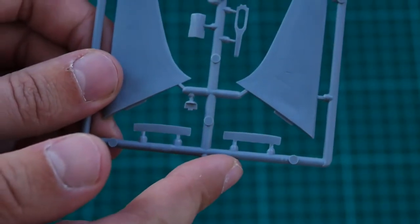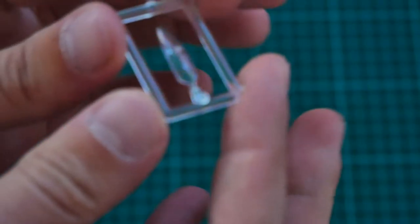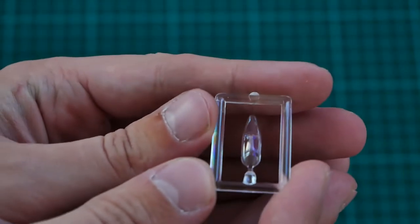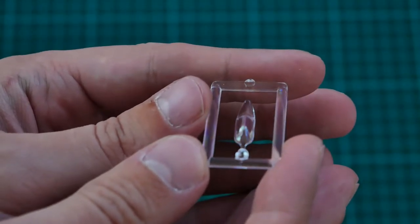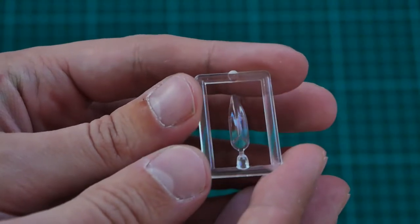Next is this nice canopy, which is molded as a one-piece part. It looks really good, but keep in mind that masks are not included in this kit, so you have to cut them with your own hands. In such a tiny scale, it might be a bit tricky, so be ready for this.